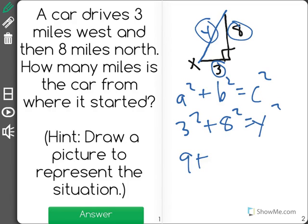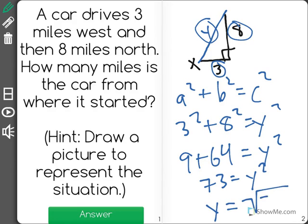Three squared is nine, eight squared is 64, and when I add those together I find that 73 equals y squared. Well that means that y would be equal to the square root of 73 for our correct answer.